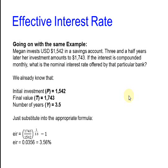We are going to calculate the effective interest rate. We are going to continue with the same example. We already know that P is 1542, the final value is 1743, and the number of years is 3.5. Just substitute into the appropriate formula. And now you get 3.56%. Notice that you now didn't need the number of compounding periods.